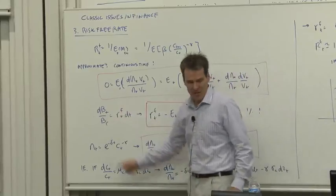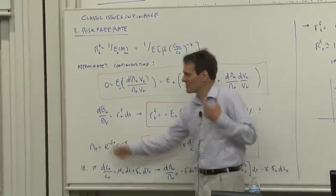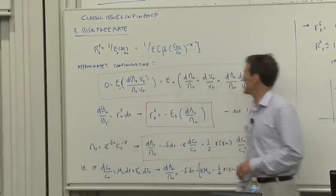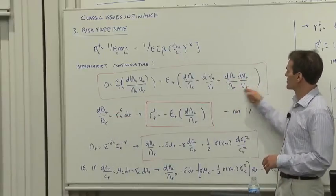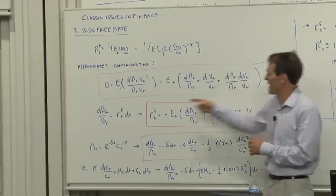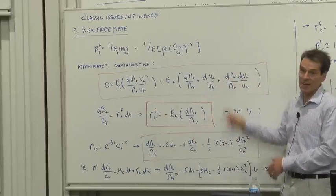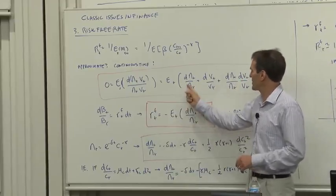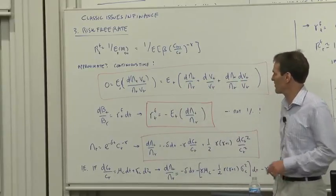A risk-free rate has a cumulative value process. I call it b, because for bond, that's a tradition. It only has an rf dt term. So this Ito term is going to vanish, right? Because if that only has a dt term, that times that is going to be of higher order. So the only terms left now are the d lambda over lambda and the dv over v.